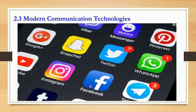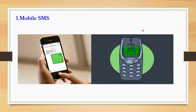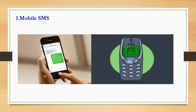Let's see how communication worked when mobile came into our lives. The first major tool was mobile SMS. Do you know the full form of SMS? SMS stands for Short Message Service. You might have seen these old mobiles with the SMS symbol — nowadays we have smartphones, and SMS looks like this.